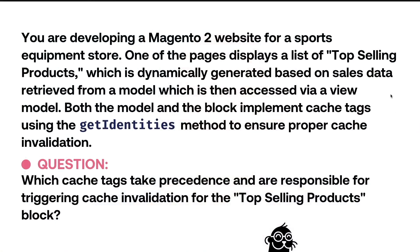So you're developing a Magento 2 website for a sports equipment store. One of the pages displays a list of top-selling products, which is dynamically generated based on sales data retrieved from a model, which is then accessed via a view model. Both the model and the block implement cache tags using the GetIdentities method to ensure proper cache invalidation. Maybe an unlikely scenario, but one that I was curious about — which leads into the question.